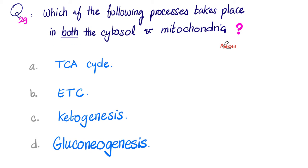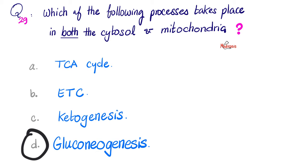Next, which of the following processes take place in both the cytosol and the mitochondrion? Please pause. The correct answer is gluconeogenesis. There are three main pathways that take place in both: number one, heme synthesis; number two, urea cycle; number three, gluconeogenesis. The TCA cycle, electron transport chain, oxidative phosphorylation, and ketogenesis occur only in the mitochondrion.